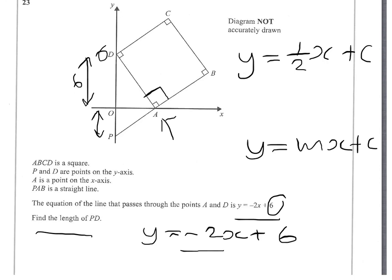Point A is found when minus 2X plus 6 equals zero, because point A is on the line DA. Remember, the X-axis is the Y equals 0 line. That will be when X equals 3.